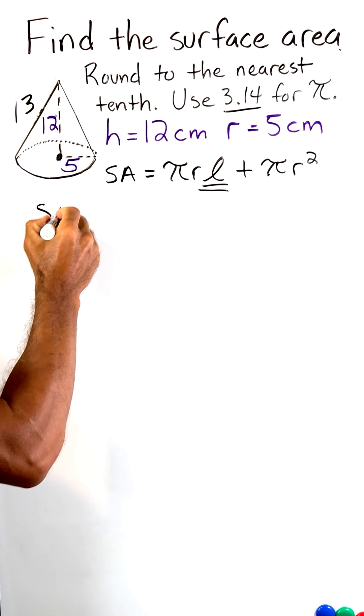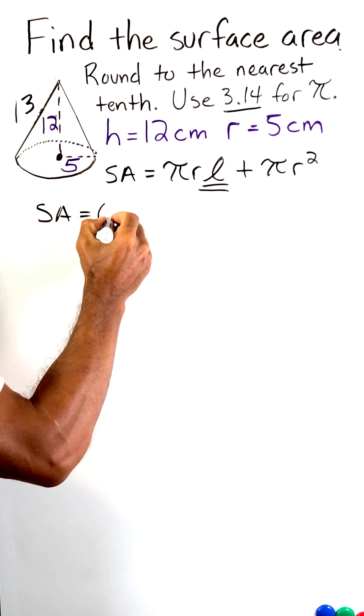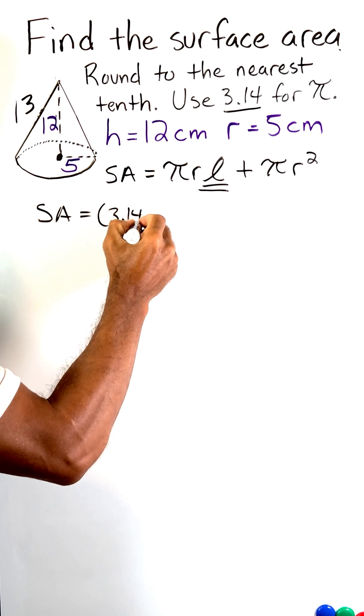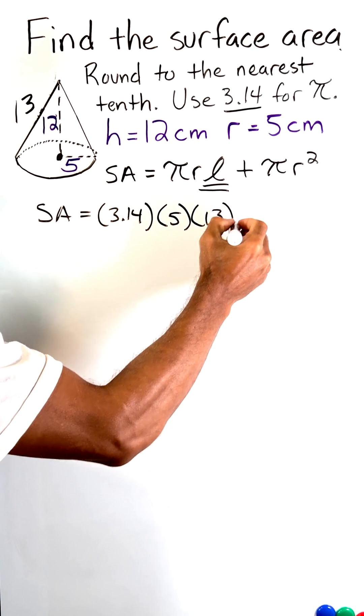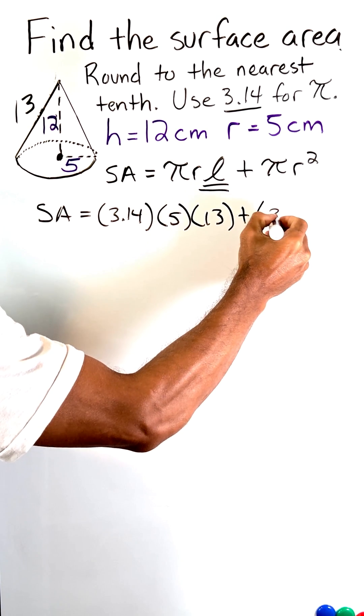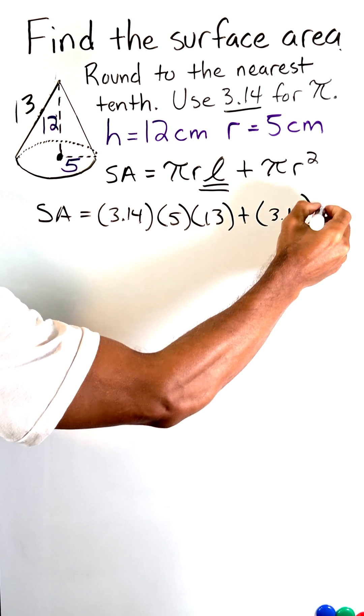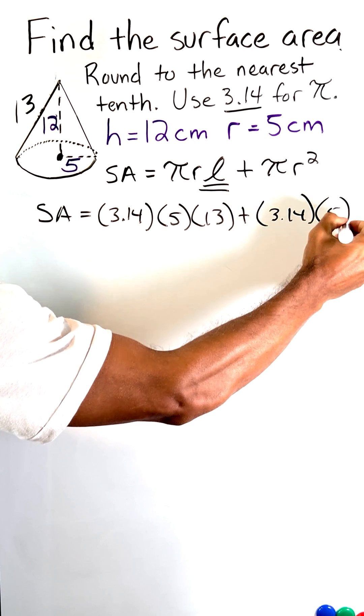Okay, now we're going to say that surface area is equal to 3.14 times 5 times 13 plus 3.14 times 5 to the second power.